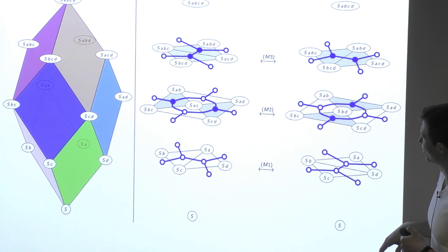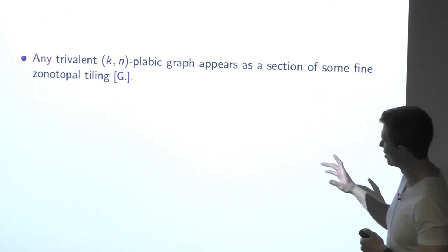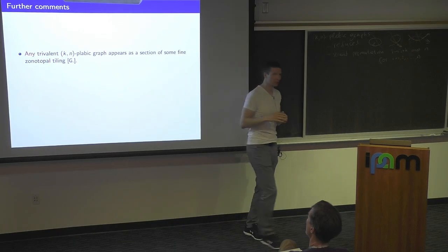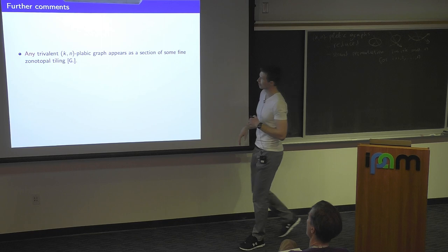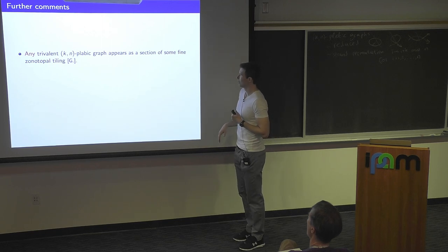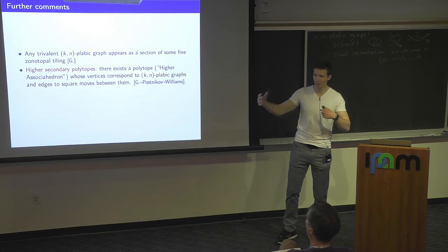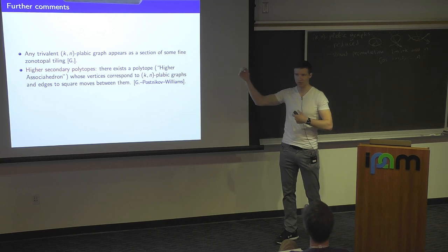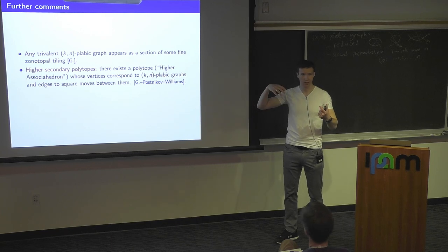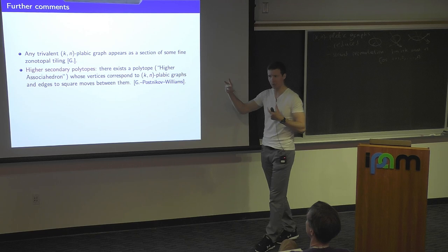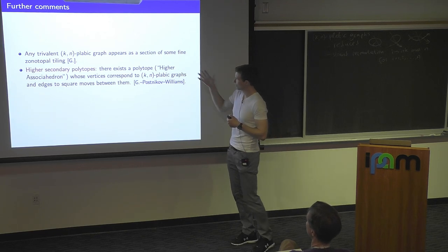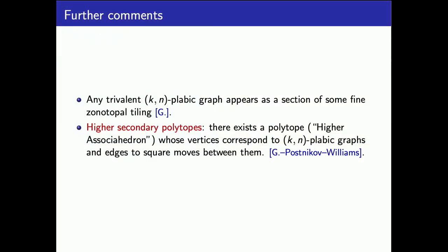That's all I want to say for zonotopal tilings. You get any trivalent plebik graph this way — it's really a very strong correspondence. Also, this construction is useful if you know about secondary polytopes. A secondary polytope is a polytope whose vertices correspond to triangulations and whose edges correspond to flips of triangulations. Using zonotopal tilings, there is a similar story for plebik graphs — there is a polytope whose vertices correspond to K-N plebik graphs and edges correspond to square moves. We call it the higher associahedron.